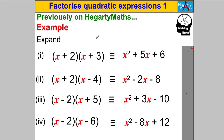When I taught you how to expand double brackets, I showed you a quick way: X multiplied by X always gives you the X² term. To get the number of X's, you take the two numbers and add them — so 2 and 3 add to give 5x. And you multiply 2 times 3 to get the 6 at the end.